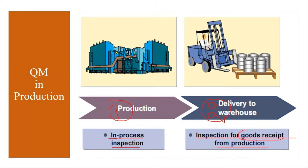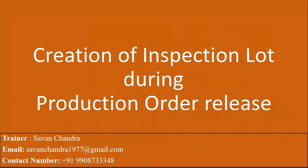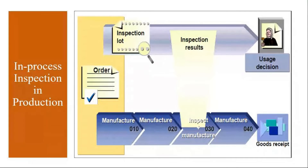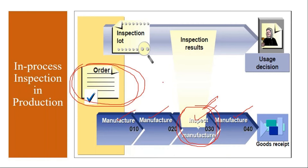We already understood goods receipt in our PP sessions, so today we will see just the integration portion. First, we will start with creation of an inspection lot during production order release. Suppose you want to do quality inspection during the production process. Let's say your production process has four operations: operation 10, 20, 30, and 40. During operation 30 — the third operation — you want to do some quality checks to verify the product is being produced as per the required specifications. When you create and release the production order, the system will generate an inspection lot for the quality team.